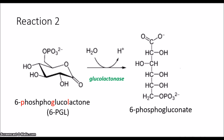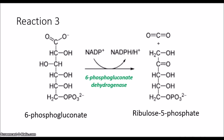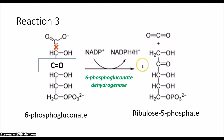Reaction 3: 6-phosphoglycolactone with the enzyme 6-phosphoglycolactone dehydrogenase creates ribulose 5-phosphate. Again, we're using NADP+ to generate NADPH. What's essentially happening is that we're going to oxidize this carbon to make it a COO group. If you remember from organic chemistry, a carboxylic acid group next to a ketone group allows for decarboxylation — this bond gets chopped off and we're left with ribulose 5-phosphate.